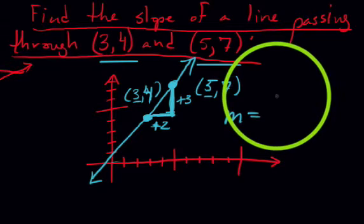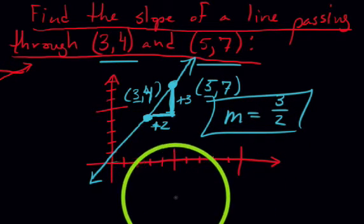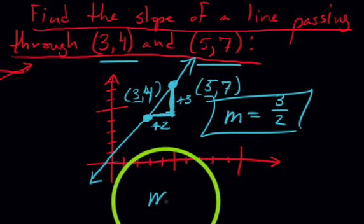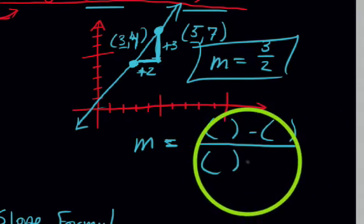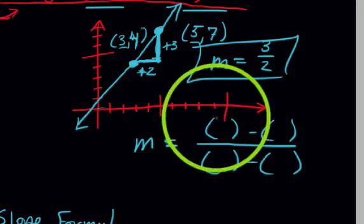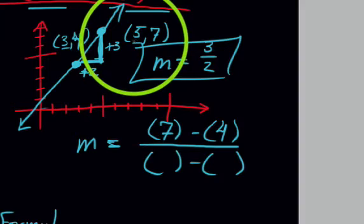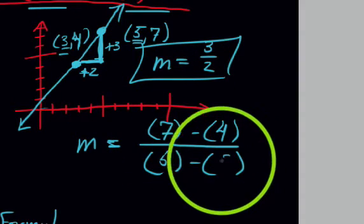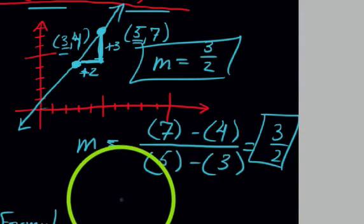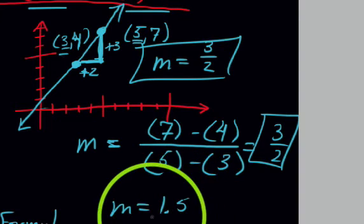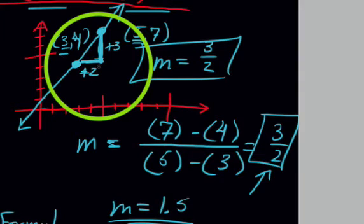From x = 3 to x = 5, it ran 2. From y = 4 to y = 7, it rose 3. So m equals rise of 3 over run of 2. Using the formula: m equals y2 minus y1 over x2 minus x1, equals 7 minus 4 over 5 minus 3, equals 3 over 2. Our slope is 3/2. You can write it as 1.5, but keeping it as a ratio lets you see the rise-to-run relationship.